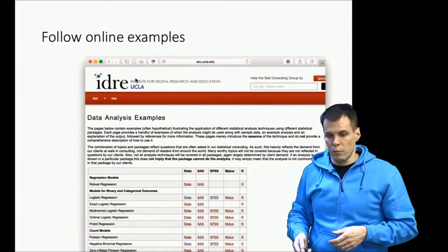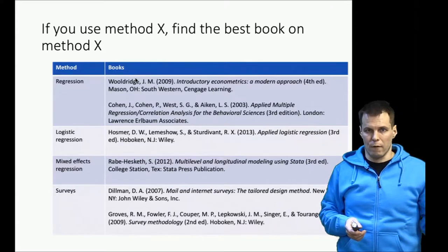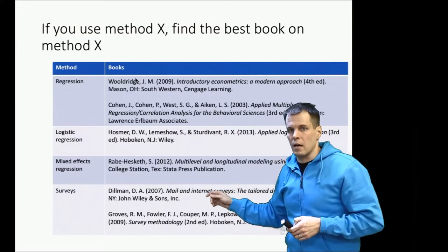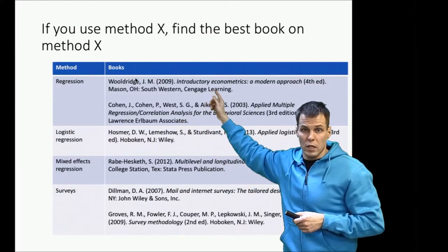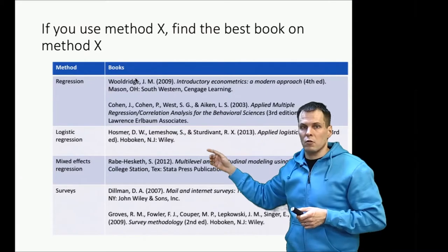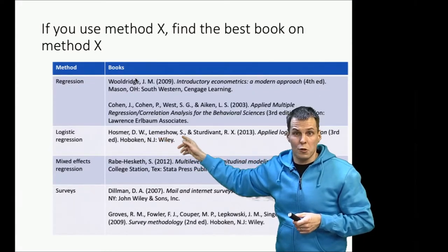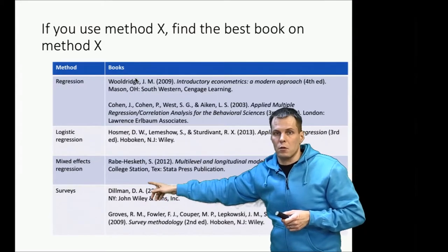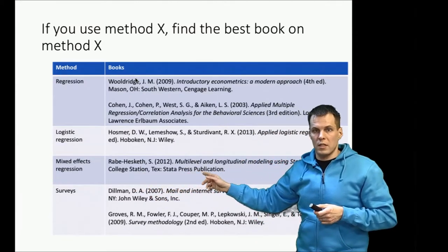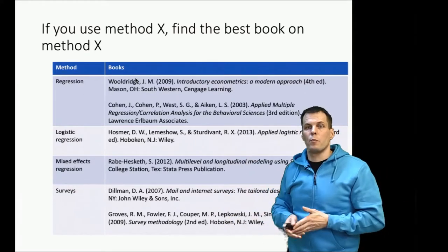It's always a good idea to read books. If you want to learn about statistical analysis methods, instead of finding a book that covers everything, find the best book about the particular method you want to use. For regression analysis, I like Wooldridge's 'Introduction to Econometrics,' and Cohen's regression book is a classic. For logistic regression, Hosmer and Lemeshow is a classic, and Lemeshow also teaches a logistic regression course on Coursera using Stata. For mixed effects regression analysis, Rabe-Hesketh's book on multilevel and longitudinal modeling using Stata is a great applied book.